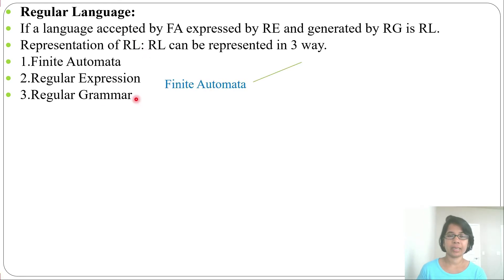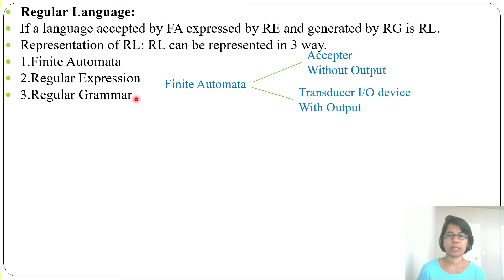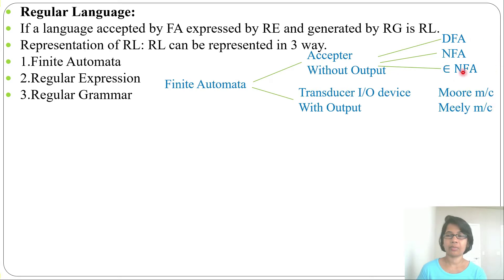Finite automata is again of two types. One is acceptor or without output, and another is transducer or with output. Without output is again of three types: one is DFA, NFA, and Epsilon NFA. Then, with output is of two types: one is Moore machine, and another is Mealy machine.